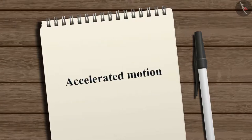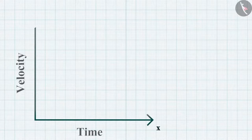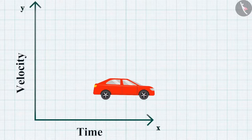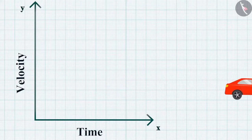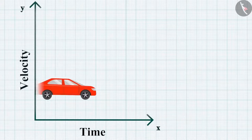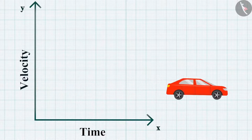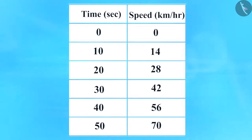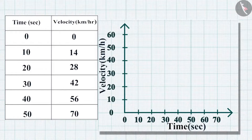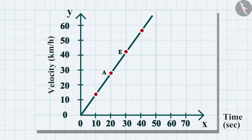Now let us consider accelerated motion and discuss the effect of uniform acceleration on the velocity-time graph. In uniform accelerated motion, velocity changes by equal amounts in equal time intervals. Suppose a train driver records velocity starting from rest at each 10-second interval. For uniformly accelerated motion, the velocity-time graph is again a straight line.